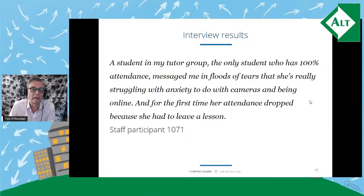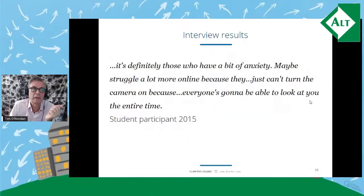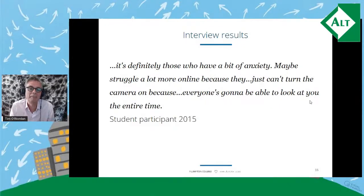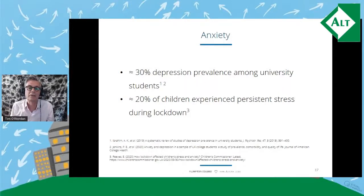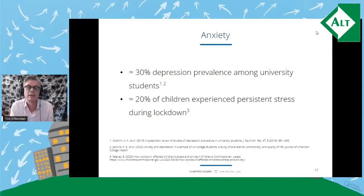That teacher really took on board what the issue was. Some students thought it was related to feeling continually observed: 'It's definitely those who have a bit of anxiety who struggle a lot more online because they just can't turn the camera on — because everyone's going to be able to look at them the entire time.' We know that anxiety and depression are more prevalent in college students than in the general population. Ibrahim and Thau estimated around 30% of US college students have some form of depression, and a recent study by Jenkins et al. in the UK found a similar proportion. The UK Children's Commissioner reported that 20% of children experienced persistent stress during lockdown.